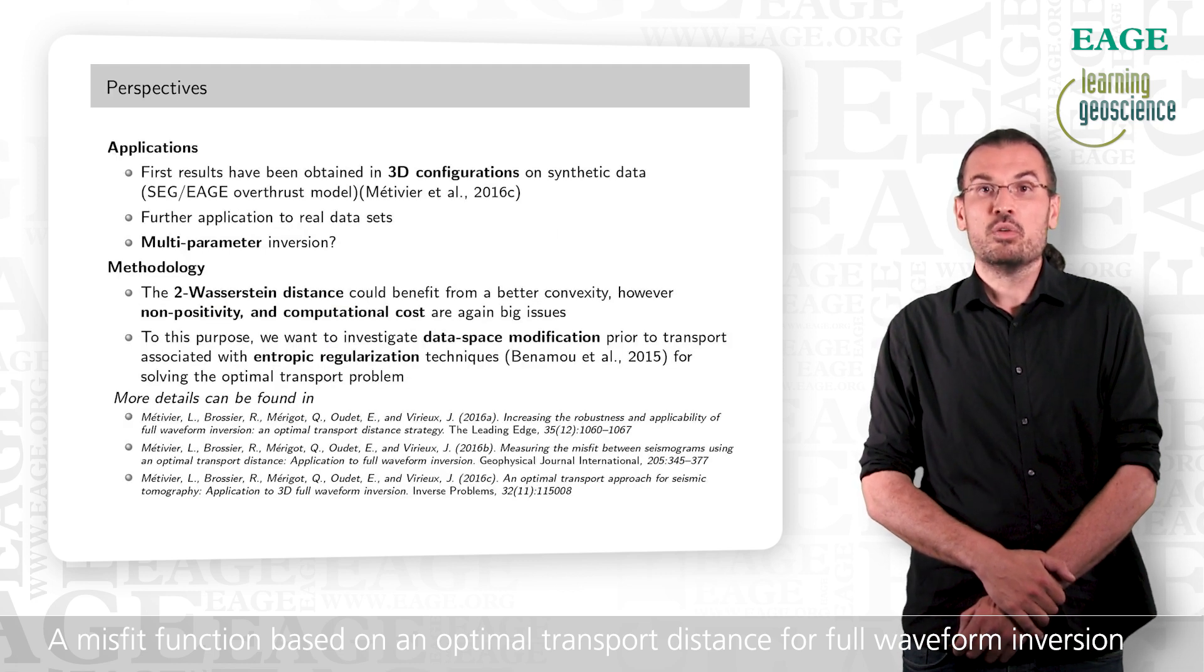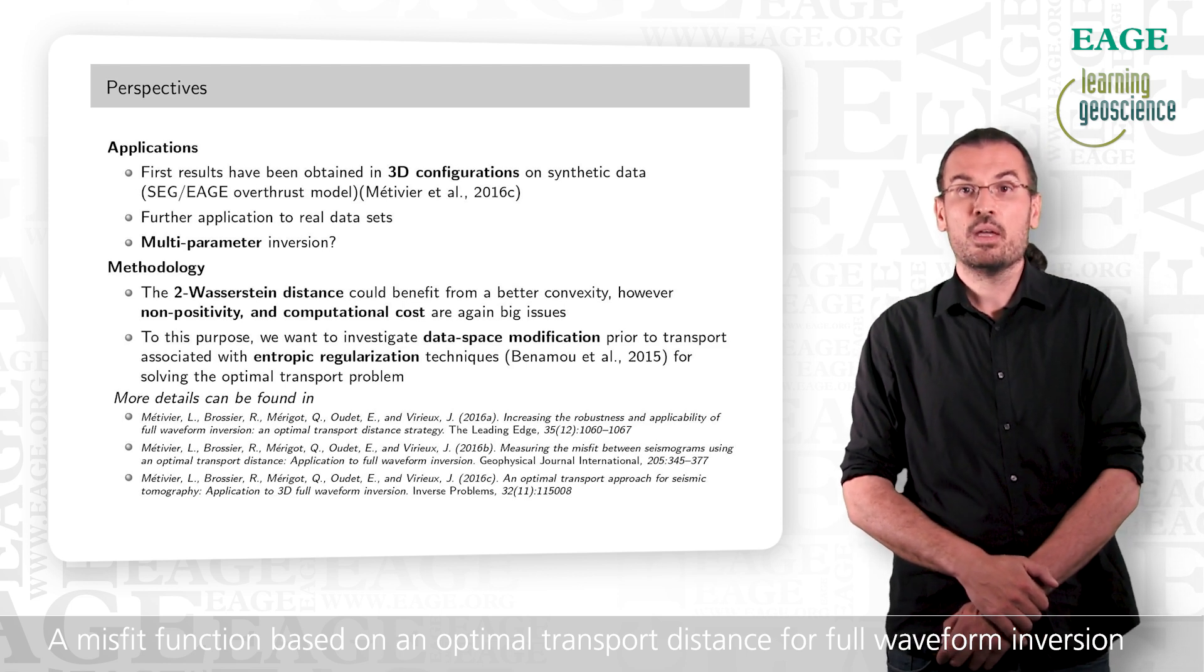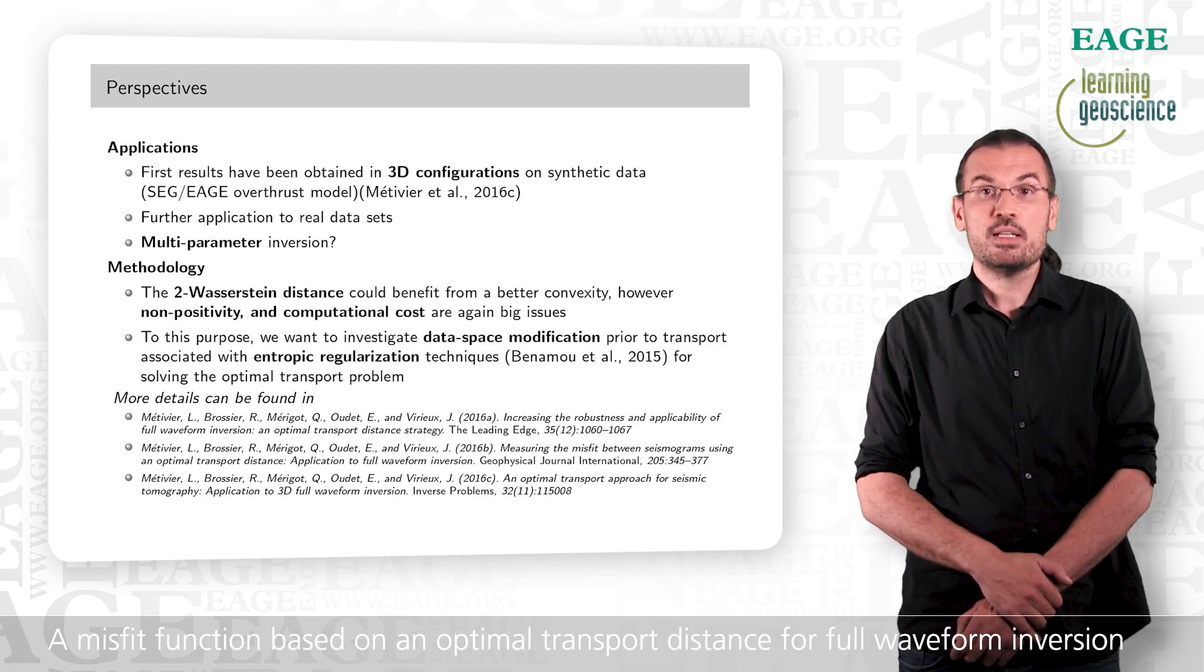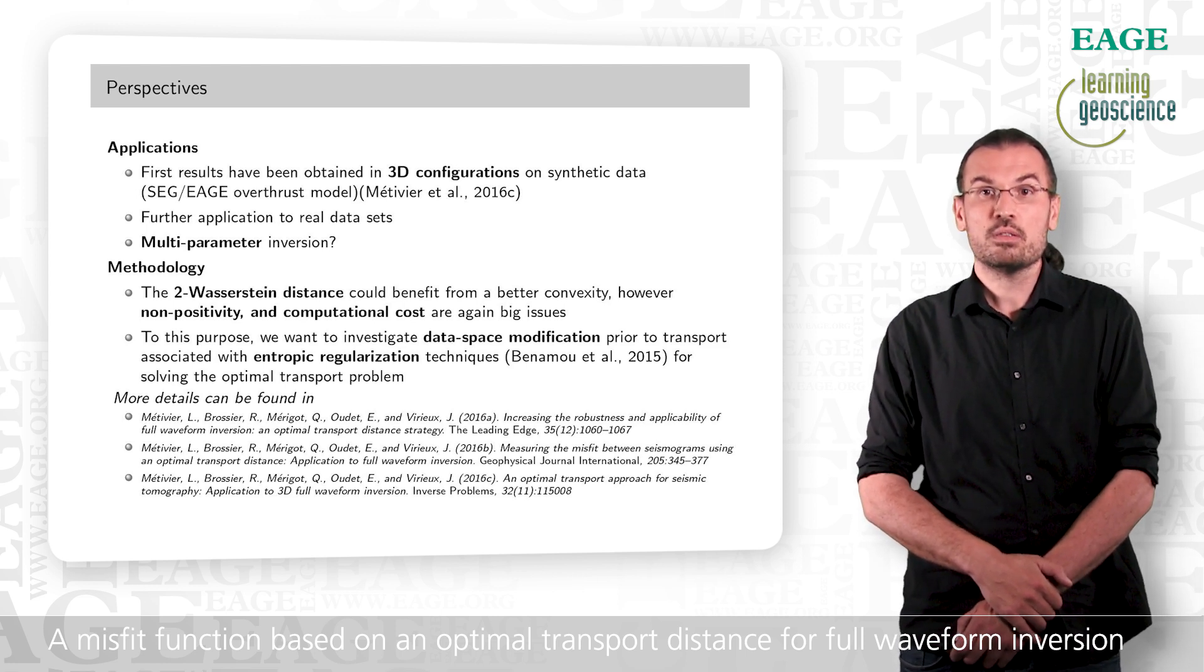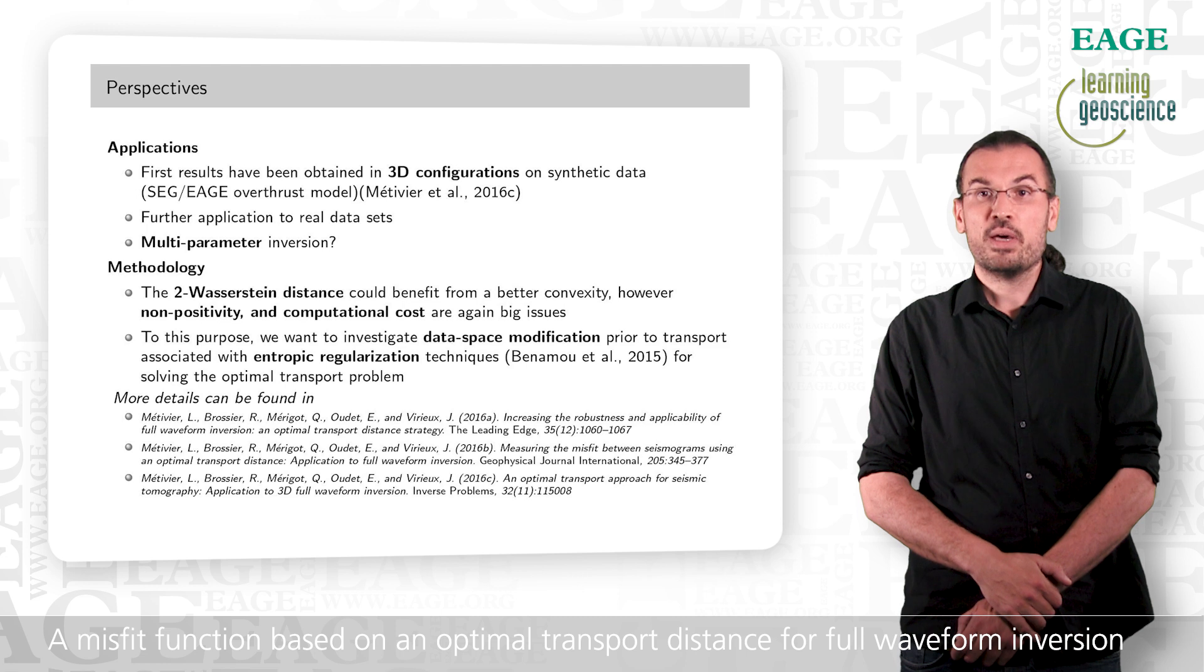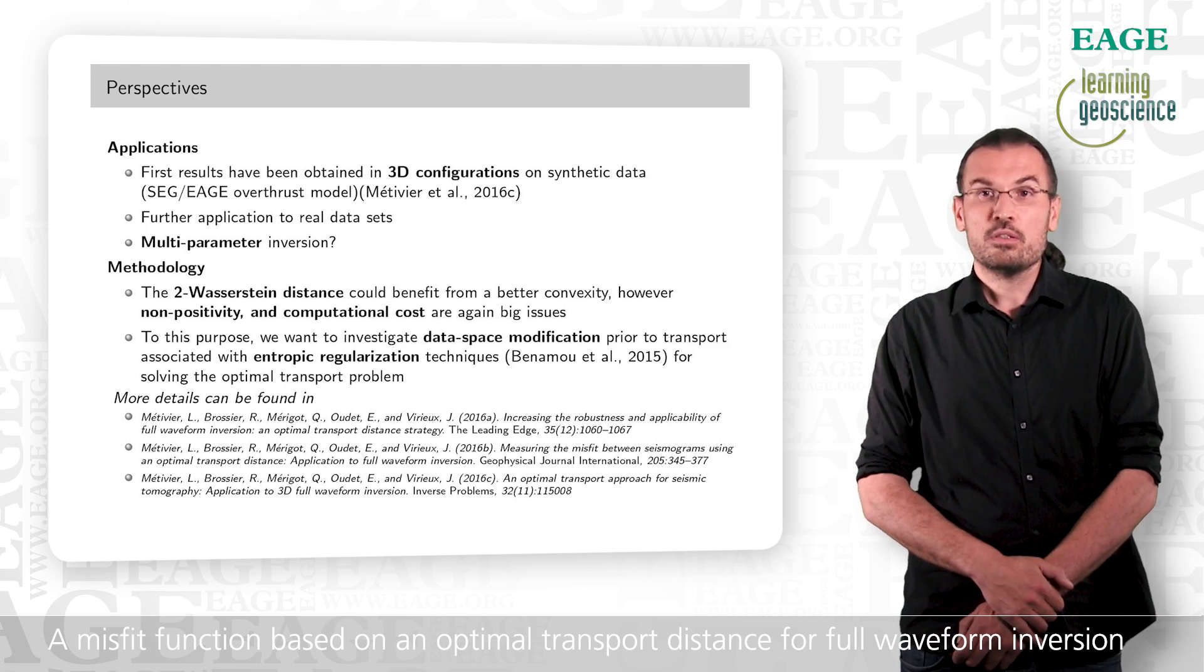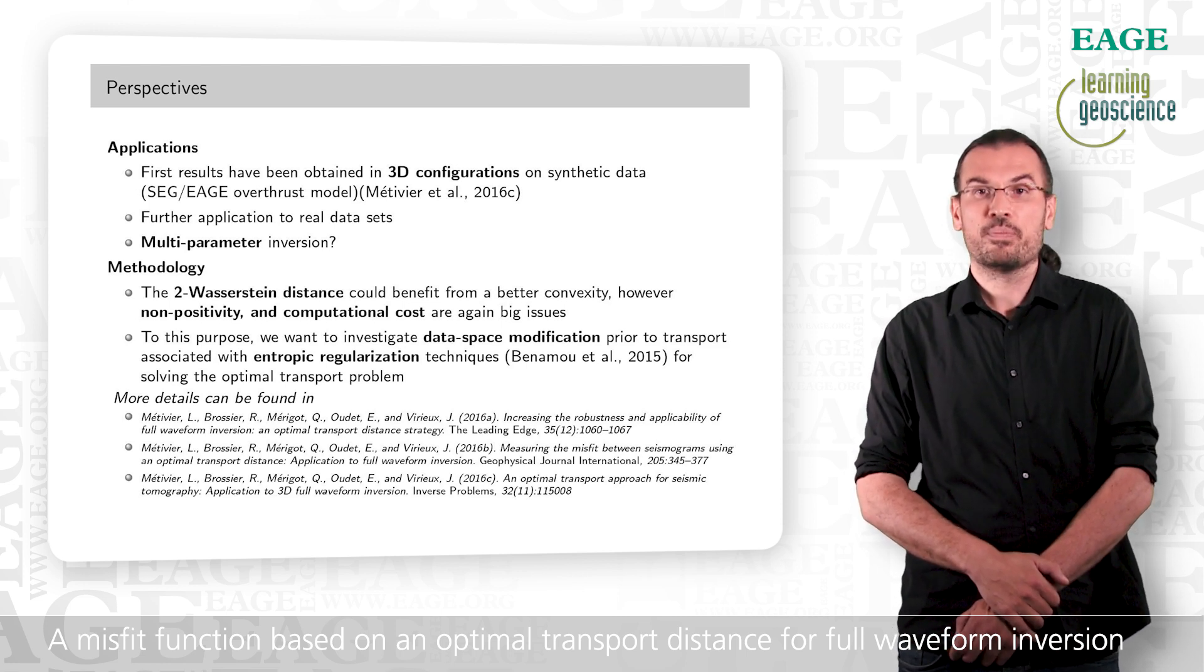Now, numerous questions remain open. First, we would like to apply this in 3D and to real data sets. And why not for multi-parameter inversion? Second, we are still interested in applying other optimal transport distances, such as the Wasserstein 2 distance. But for this, we need to have a strategy allowing to consider non-positive data, which could be based, for instance, on non-linear transform of the data. For the computation of the optimal transport distance, we are thinking using entropic regularization techniques or other types of transport formulation. This is ongoing work and there is still a lot to do.